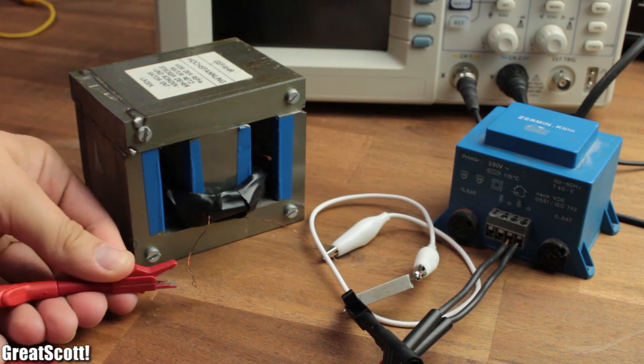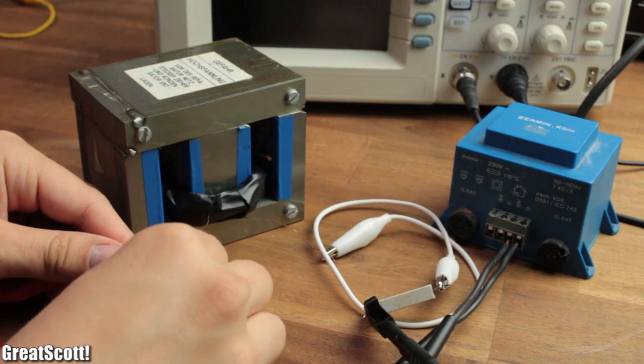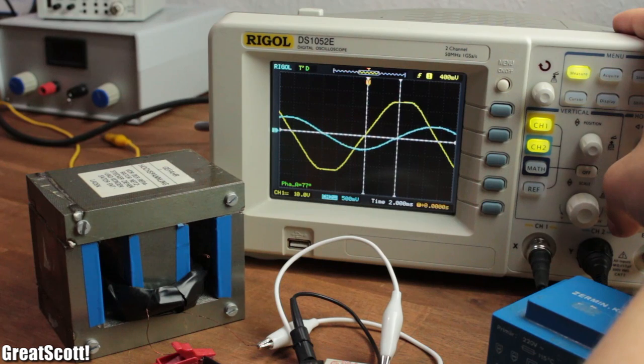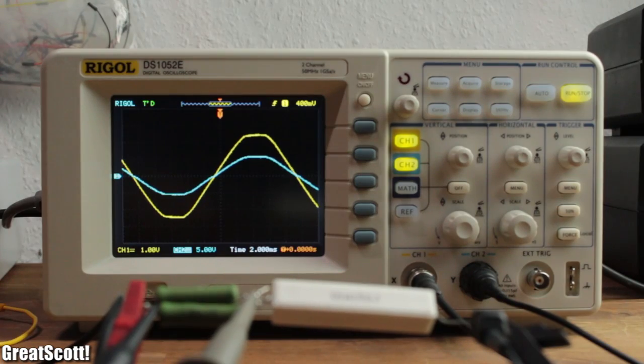Next, I hooked up my 1 Henry coil with a 10 ohm resistor to my 50 volt RMS transformer. If we take a look at the voltage and current form, we can clearly see that they are not lined up perfectly like it would be with a simple resistor circuit.